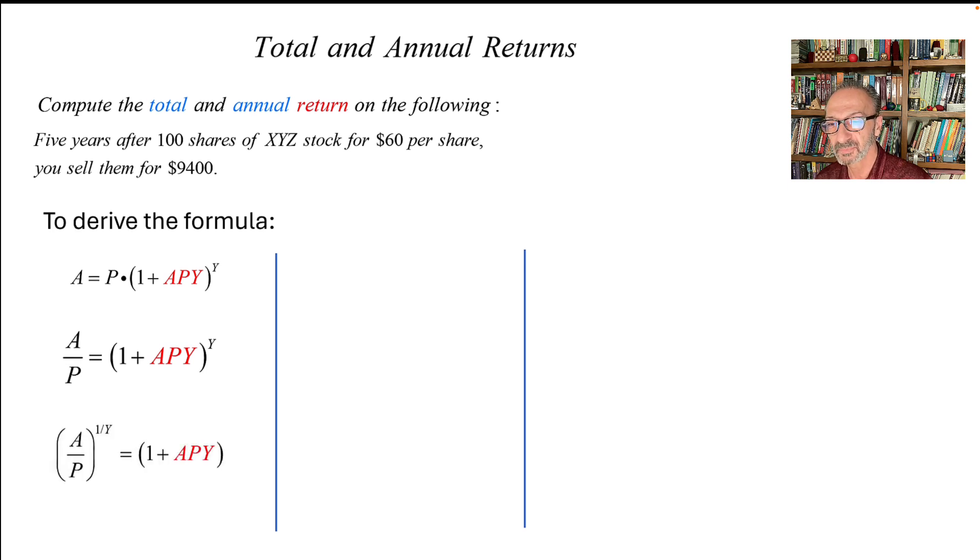And now it becomes A over P to the power 1 over Y equals 1 plus APY. We don't need the parenthesis right here. I just skip them to show you that we got rid of the Y, so we don't have the parenthesis, as you could see.